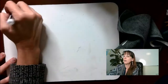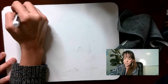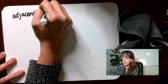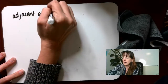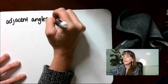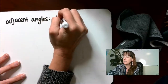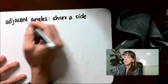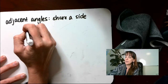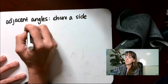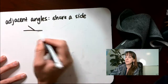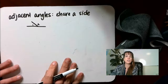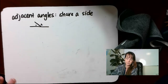The first vocab term is adjacent angles. Adjacent angles share a side. So that might be something like angle one and angle two — these would be considered adjacent angles. Make sure you're writing that down.